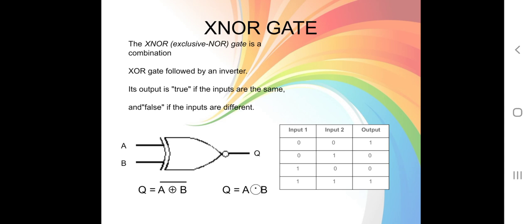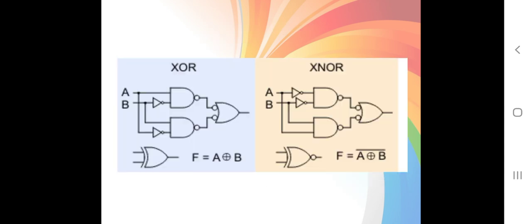There are two ways to write down the XNOR gate. You write the XOR gate expression then put a bar symbol on top — A XOR B bar. Or you can also write it as Q equals A circle-dot B. For the exam, use the first method: A XOR B bar — that is the XNOR gate. So we have XOR and XNOR gate.